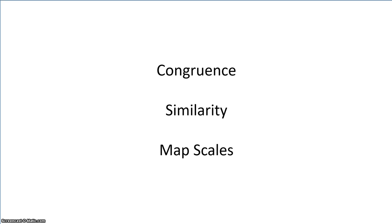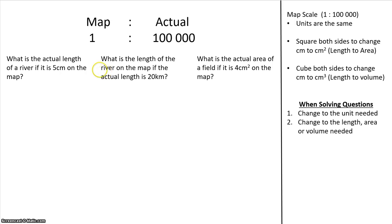Hello everyone, welcome to another video. Today we're going to do map scales. On a map there is always a scale — in this case the scale is 1 to 100,000. What it means is if it is 1 cm on the map, in the actual place it is 100,000 cm.